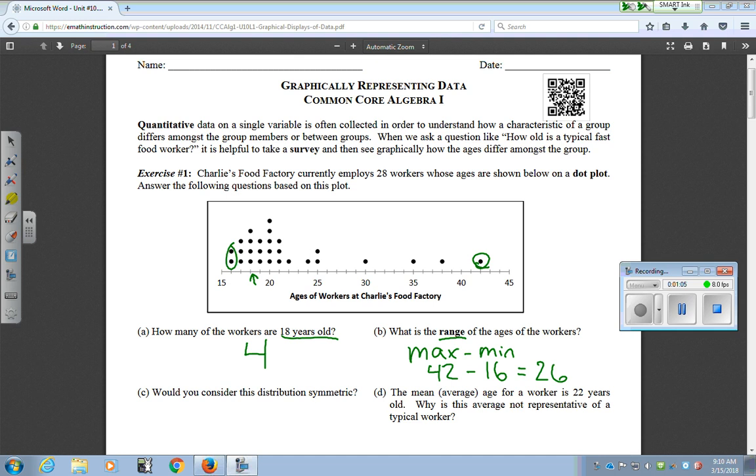Now for part C, it says, is it a symmetric distribution? Symmetric would mean that it kind of falls equal on each side. In this case, if you're looking at all the dots, there are more dots on the left here, this area, than there are on the right. So we're not going to consider this symmetric.